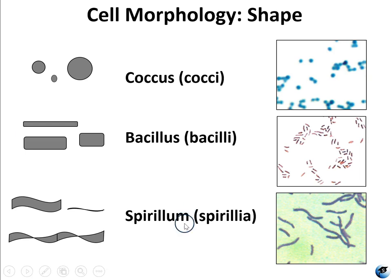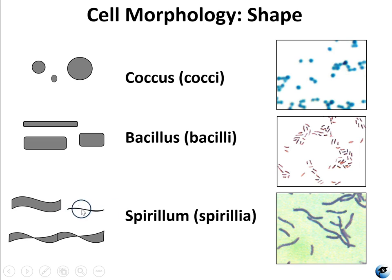A spirillium looks kind of like the symbol for approximately — it goes up and it goes down. These are not twisting. If they were twisting like a corkscrew, that would be a spirochete. Spirillium can be small and thin, or thick, and they can also come in chains.